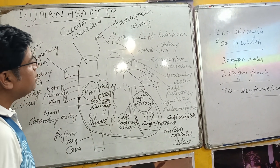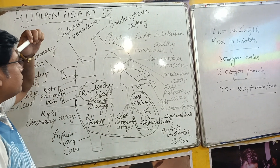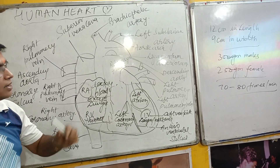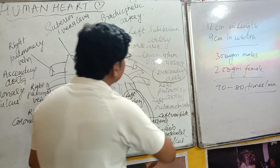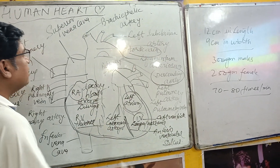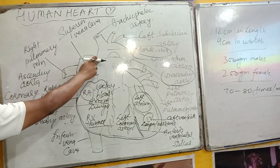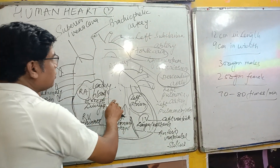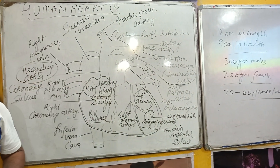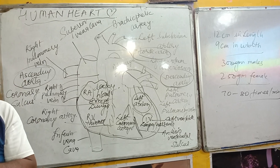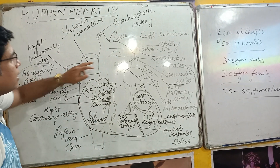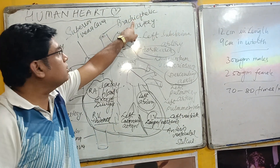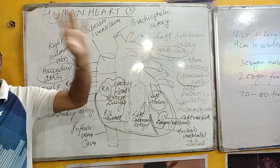The aorta is divided into three parts: the ascending aorta, the aortic arc, and the descending aorta. From the arc of the aorta, an artery rises which is known as the brachiocephalic artery. Oxygenated blood is supplied through the ascending aorta.